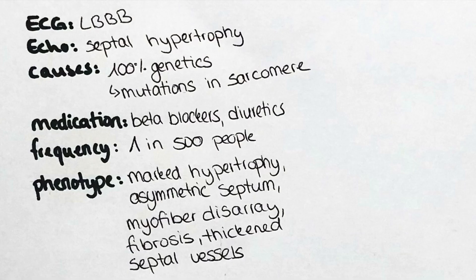Causes are solely of genetic origin and are due to mutations in the sarcomere. These can be more specifically in the actin filaments, in the beta-myosin heavy chain, alpha-tropomyosin, troponin T, myosin light chain, troponin I, or titin.